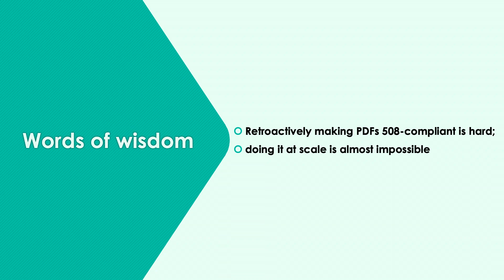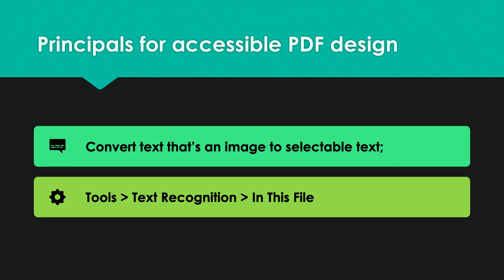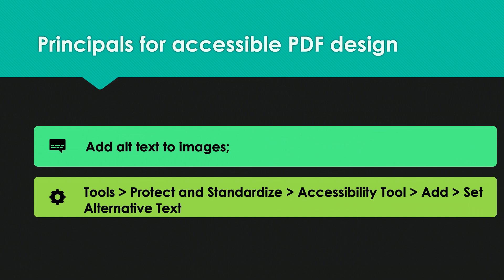That said, there are principles for accessible PDF design — sometimes a PDF is the path forward and your client needs them. These tips come from Indiana University and discuss ways to make PDFs accessible to screen readers using Adobe Acrobat Pro. First, if you want to convert text that is an image to selectable text, go to Tools > Text Recognition > In This File. If you want to add alt text to images, you can follow the corresponding path. Alt text is very important because it describes to screen readers what is happening in an image, and you want to add it whenever you're adding an image to a Drupal site.